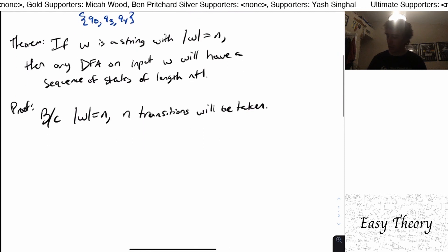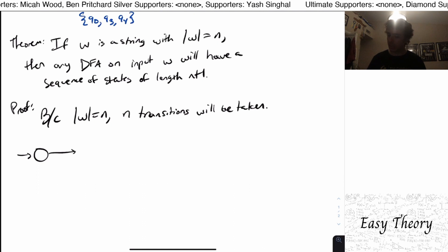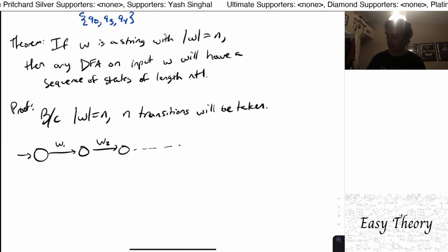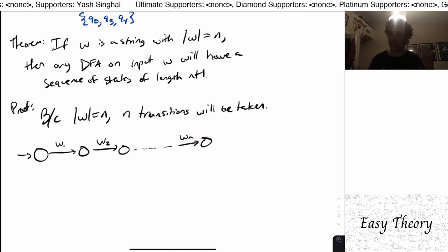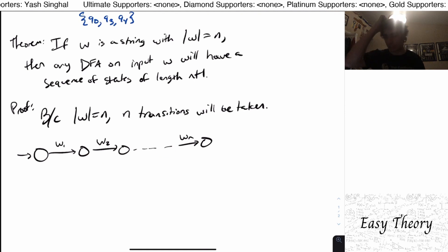So what would that look like? Well, we would have to start with the start state no matter what. And then we take some transition, and then we take another transition, etc. And then we end up in some state here, it could be one of the other ones. But the point is that we're going to have a sequence of n plus one states.